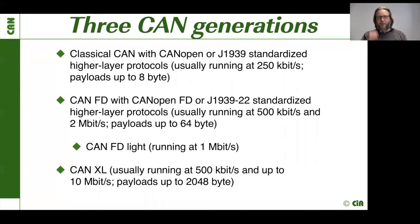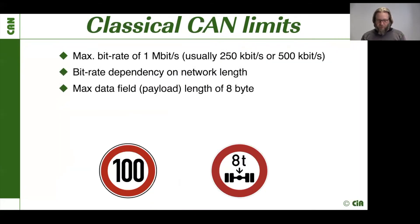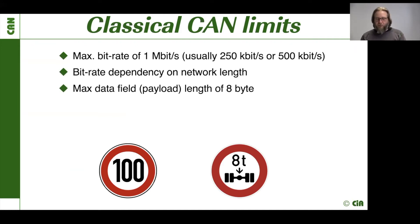CAN-XL is designed to have a data rate of up to 10 Mbps and payloads up to 2 kilobytes. The classical limits of CAN — the limits of classical CAN — are of course a limit at 1 Mbps. Normally those networks are run with 250K or 500K, and we have the bitrate dependency on the network length.